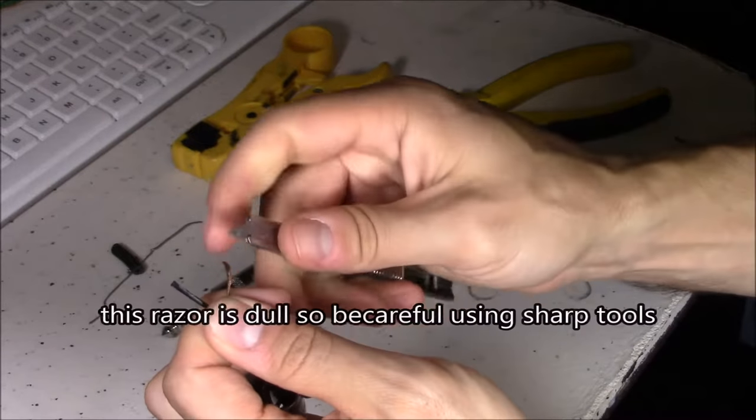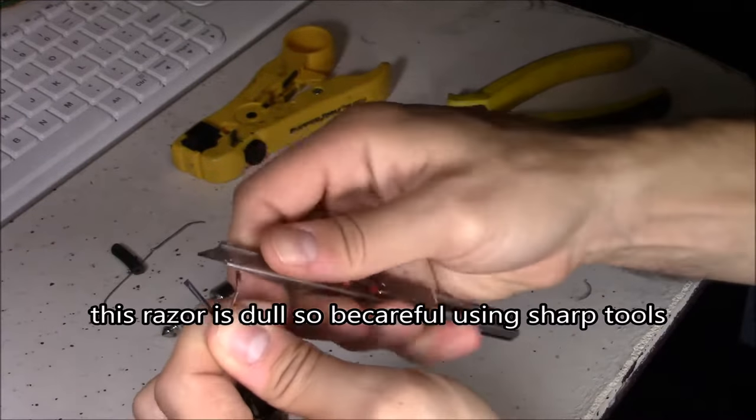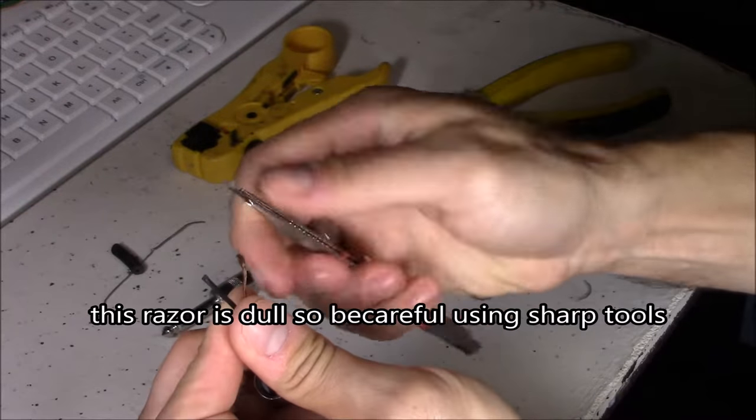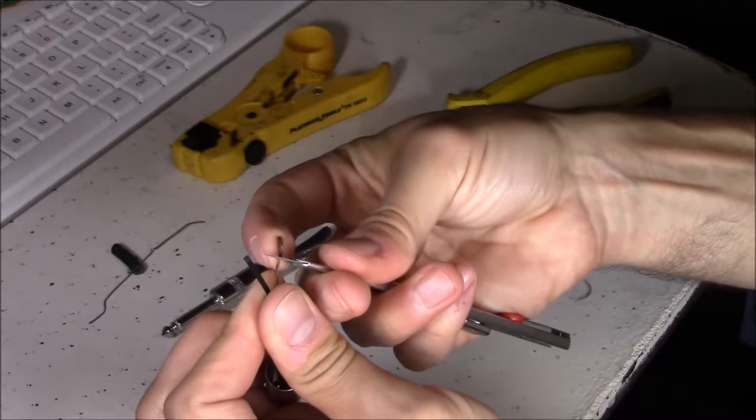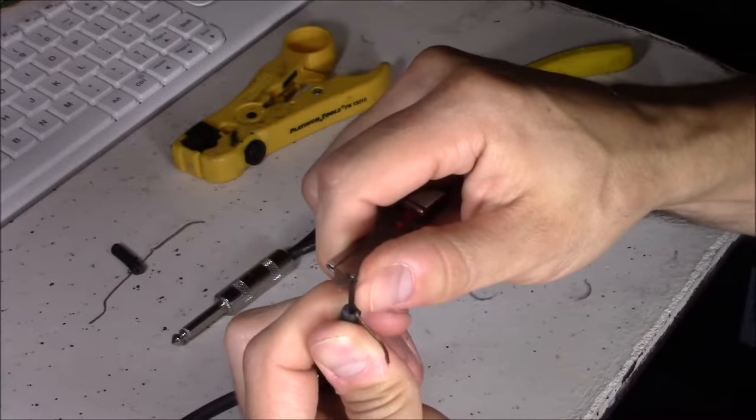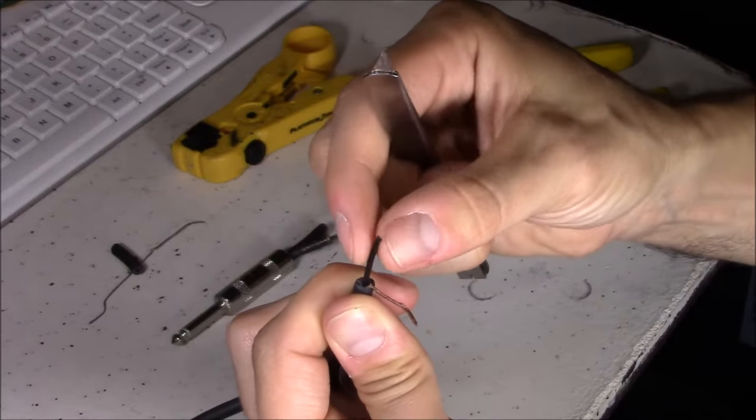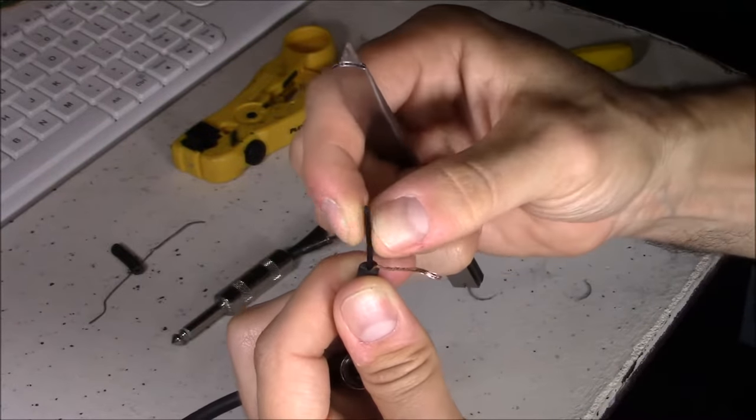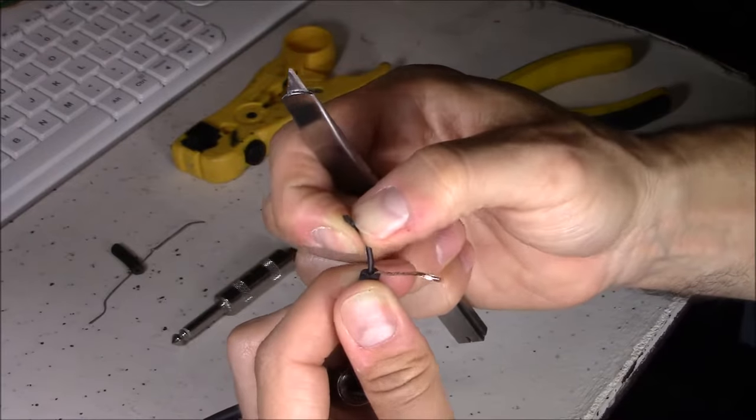Just clean off the ends and I'm scraping it because it could have oxidation and you want it shiny. Next I'm going to use my razor and cut the tip off right here.